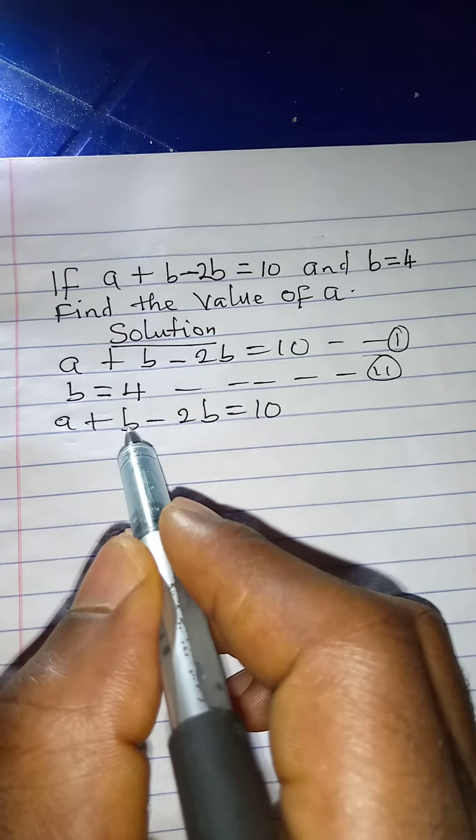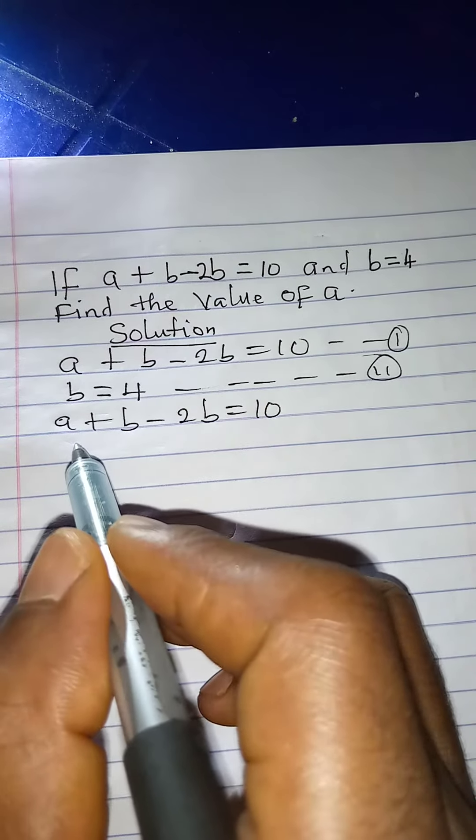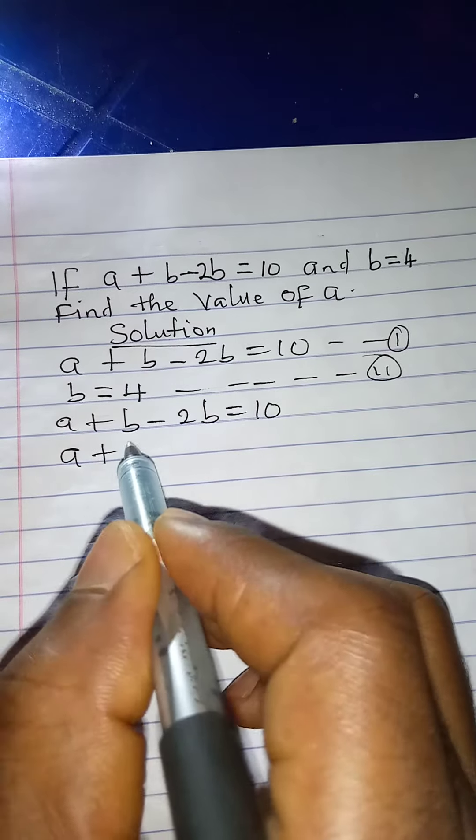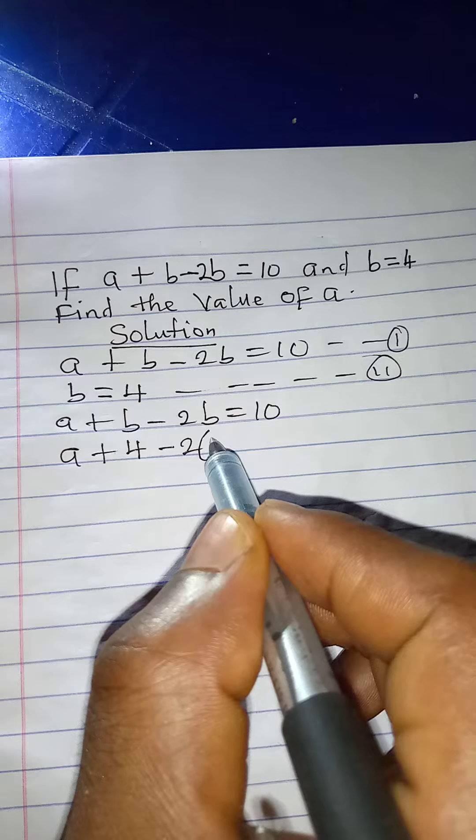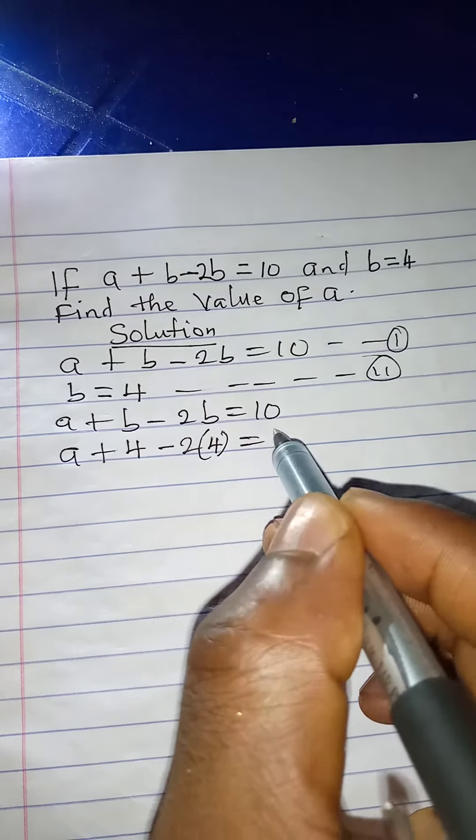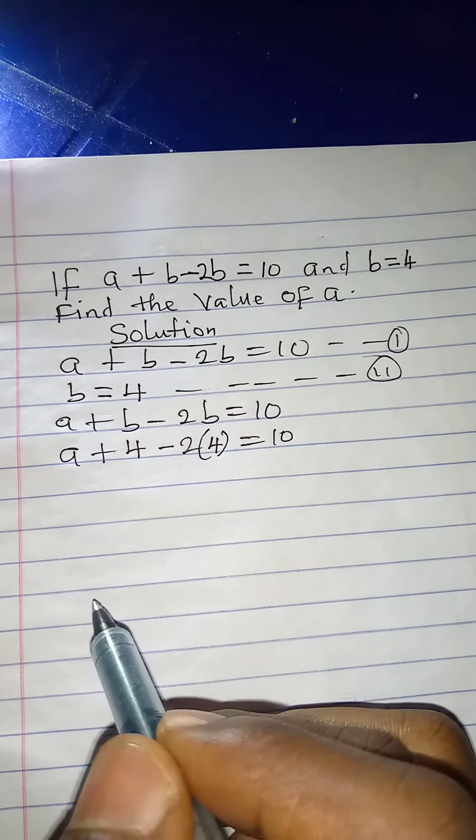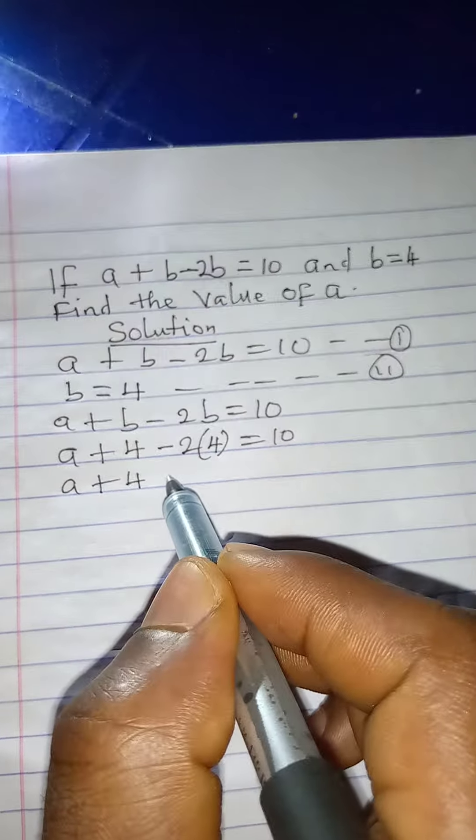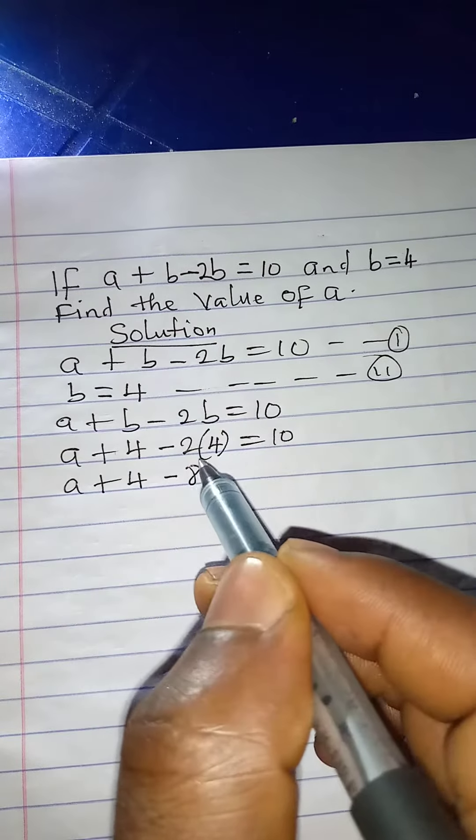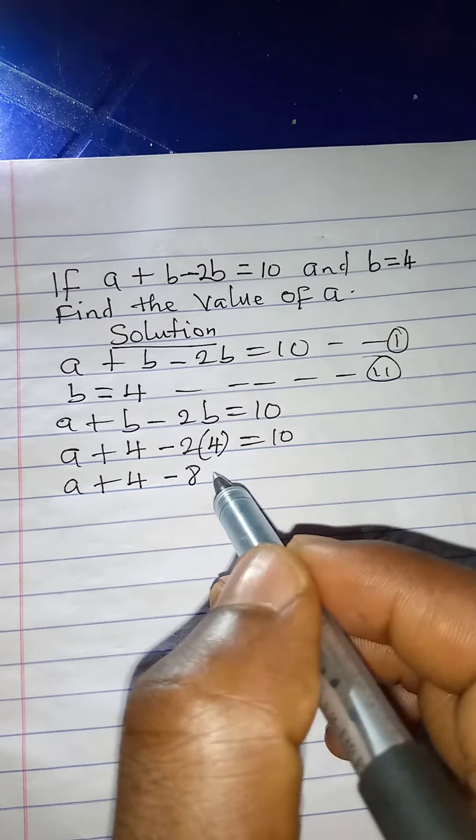In place of b now we'll have 4. So a plus 4 minus 2 into 4 is equal to 10. I will open this bracket: a plus 4 minus 8. Negative 2 times 4 will give us negative 8, equal to 10.